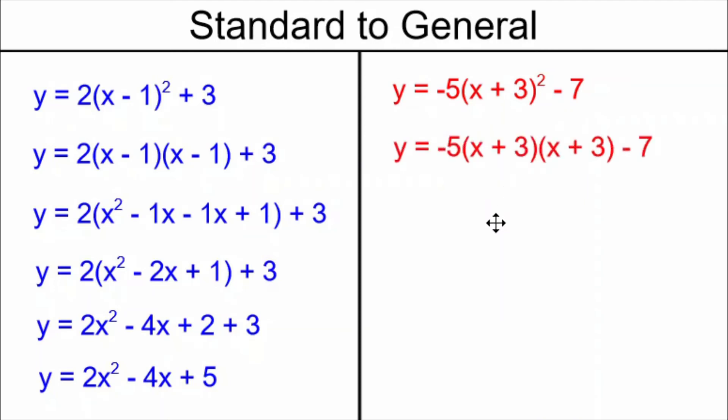I rewrite (x + 3)² as (x + 3)(x + 3). I square that binomial first using FOIL and I get x² + 3x + 3x + 9. I combine similar terms and I have x² + 6x + 9. I multiply the trinomial by negative 5.